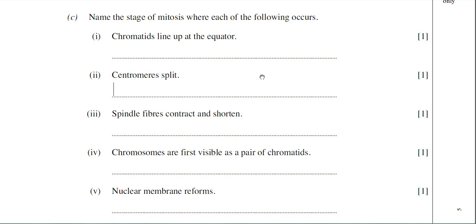Centromeres split. The centromeres split during anaphase, because that's when the sister chromatids are being pulled to opposite poles of the cell. Spindle fibres contract and shorten. That's anaphase again. It's when they contract and shorten that they pull the sister chromatids to opposite poles.